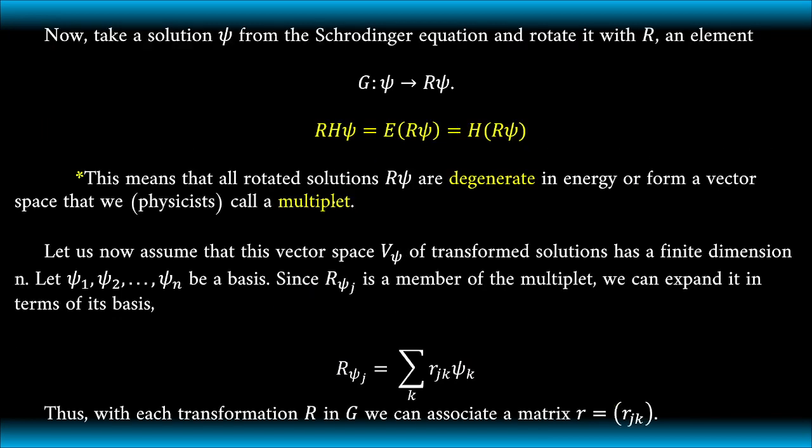Now, take a solution psi from the Schrödinger equation and rotate it with R, an element of the group. We have the rotation operator times psi, and we can have this equation which says that all rotated solutions R𝜓 are degenerate in energy or form a vector space that we call as multiplet.